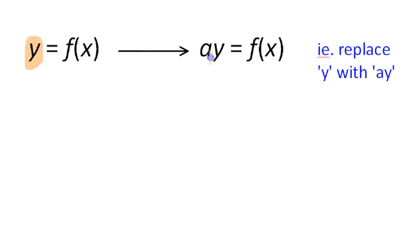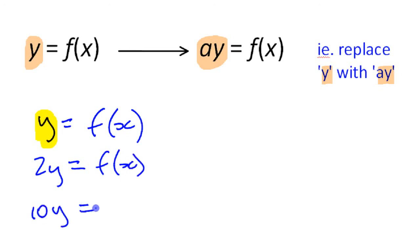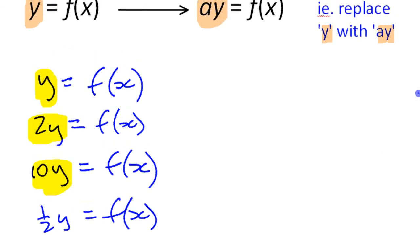Here we're going to look at what happens when you have a function and you replace y with some number times y — so wherever the y is, you're replacing it with something like 2y, 10y, or a number smaller than one like a half y. That's what we're looking at here.